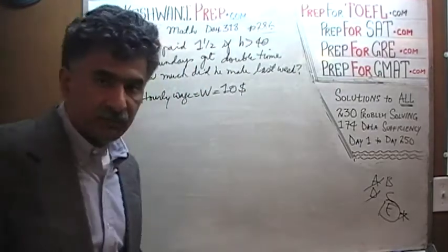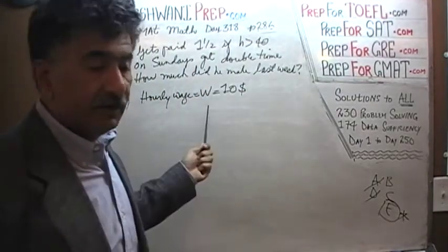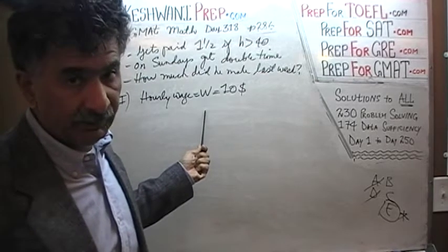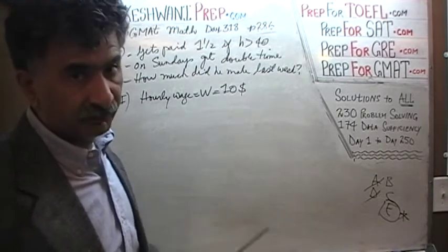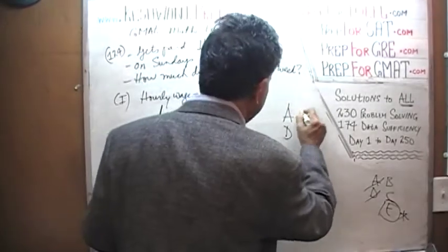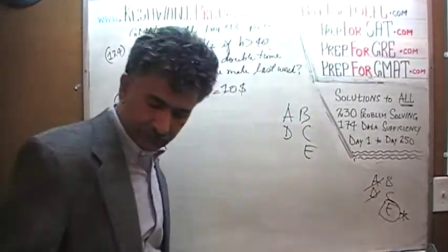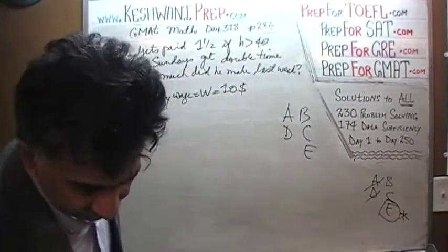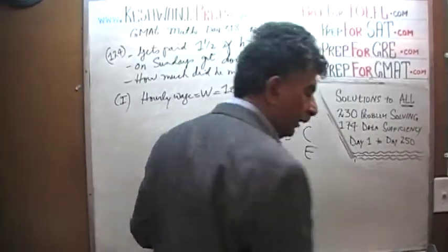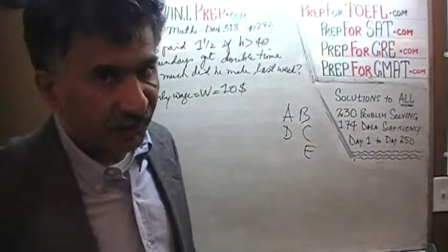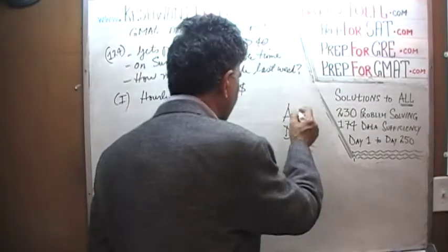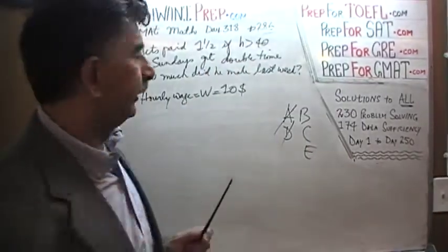The first statement tells us that his hourly wage W is ten dollars — he makes ten dollars an hour. Simply knowing how much he makes per hour is not enough to figure out his total income last week. It's not useless information — we might need it — but it is not sufficient by itself. Since statement 1 is not enough, the answer cannot be A or D.